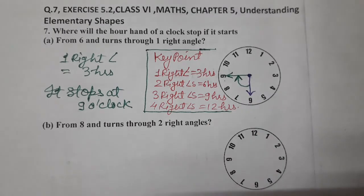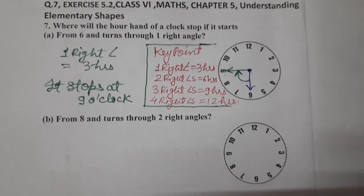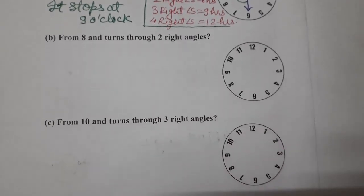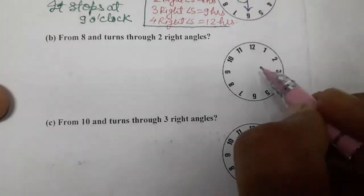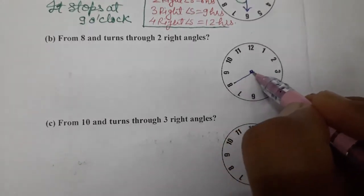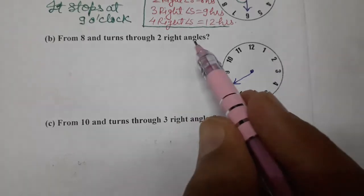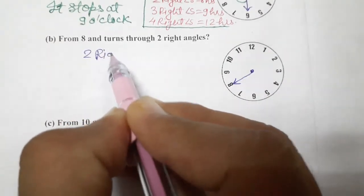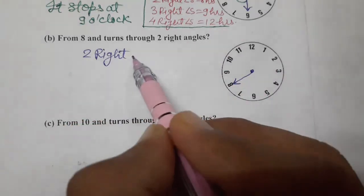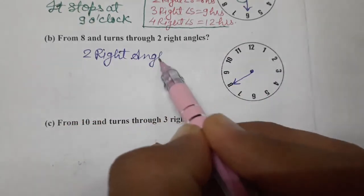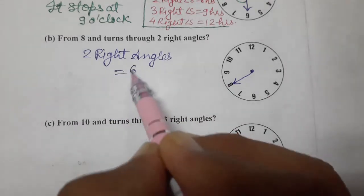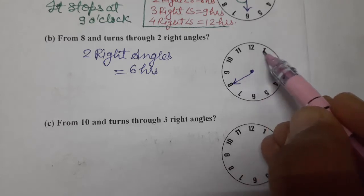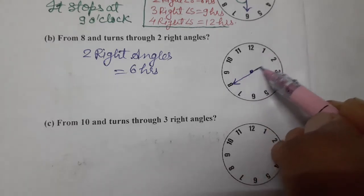Next one: starting from 8, turning through two right angles. Two right angles equals 6 hours. Moving 6 hours clockwise from 8: one, two, three, four, five, six — we reach at 2. So it stops at 2 o'clock.